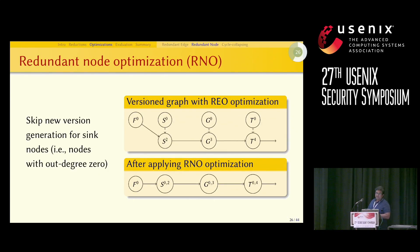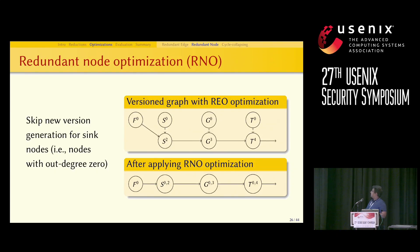Another technique is redundant node optimization: if a node has not been observed or does not have any outgoing edges, we do not create any new versions for incoming edges. For example, S0 has no outgoing edges, so S0 and S2 can be merged into one node. The same applies to G0 and T0.